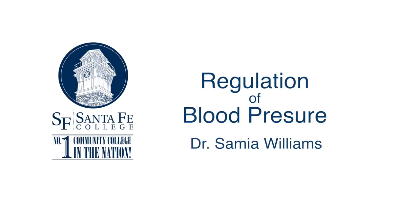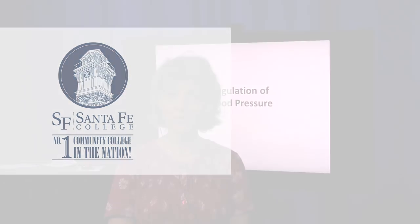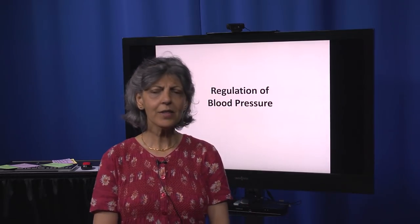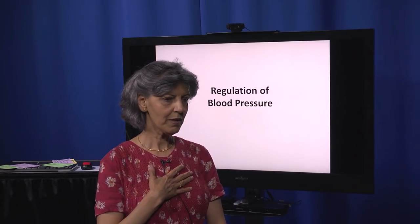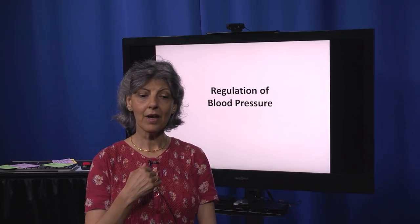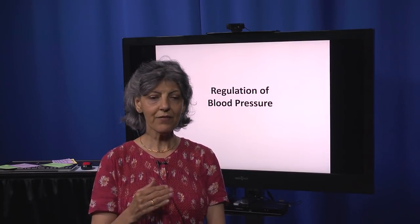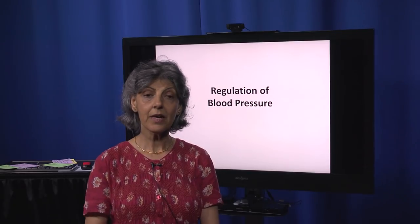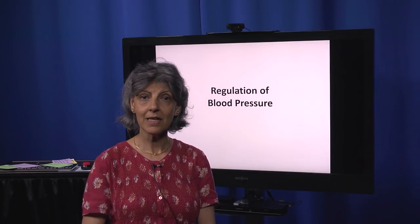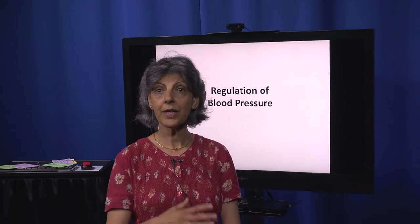Welcome back. We are going to learn one very important concept, which is the regulation of blood pressure. Every person has a set blood pressure — for instance, if my blood pressure is 110 by 70, this is the systolic number and the diastolic number. This is what my systems are programmed to function with. If there is any increase or decrease in this set homeostatic number, there are going to be mechanisms in our body that will start to work in order to restore it.